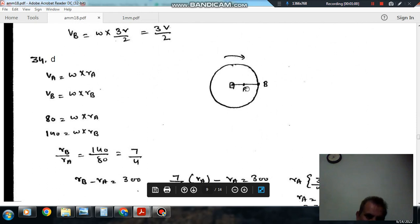The angular velocity is omega, so velocity of point A is omega times rA, and velocity of point B is omega times rB. Since velocity of A is 80 and velocity of B is 140, we have 80 equals omega times rA